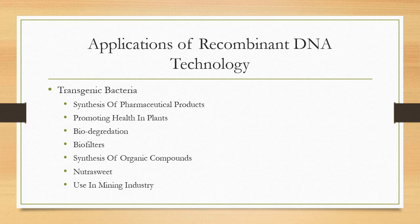The other use of transgenic bacteria is promoting health in plants. Transgenic bacteria are used to promote the health of plants. For example, a bacterium normally forms colonies in the roots of corn plants. Some genes from another bacterium have been inserted into these bacteria. These genes code for an insect toxin, and the toxin protects the roots from insects. So there is no need to use chemical pesticides to kill the pests — the plants themselves produce toxins that protect the roots from insects.